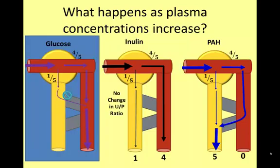As the plasma concentration of glucose increases, the filtered load of glucose also increases. As glucose plasma concentrations reach about 3 mg per milliliter, the glucose transporters become overwhelmed. Once the transport maximum of 360 mg per minute has been surpassed, some of the filtered glucose will remain in the tubule and be excreted in the urine.